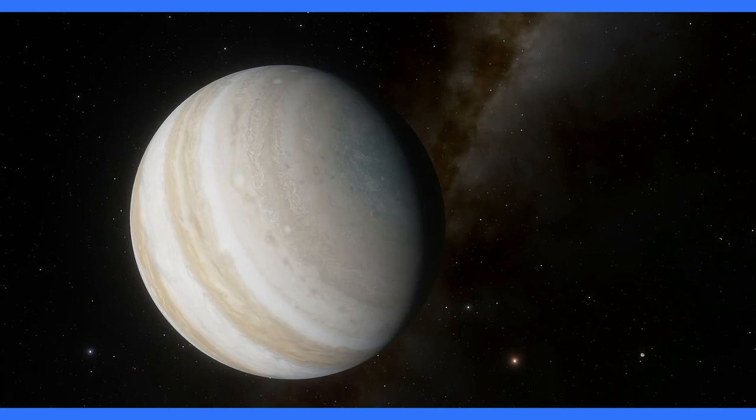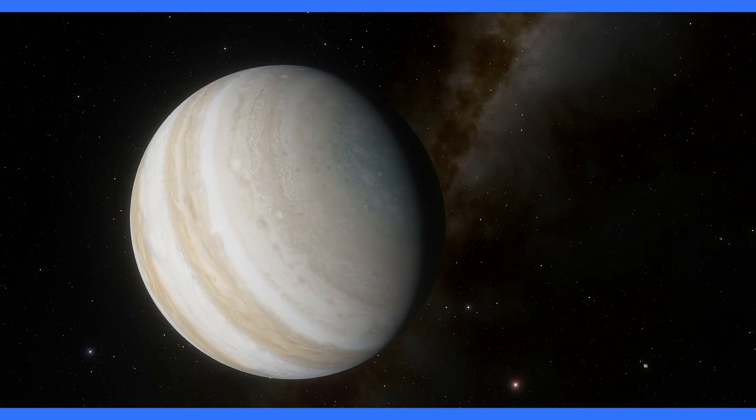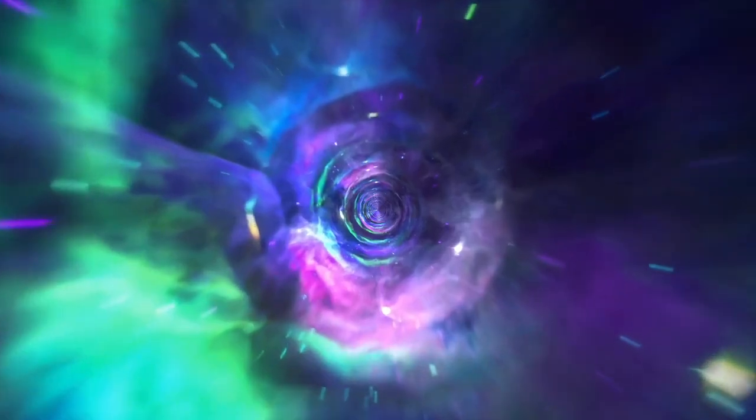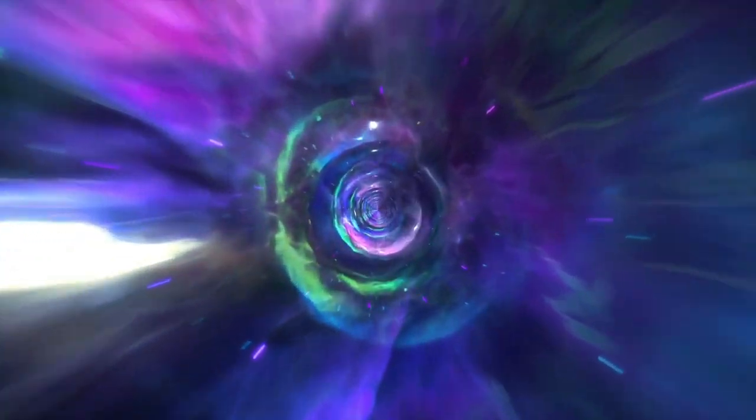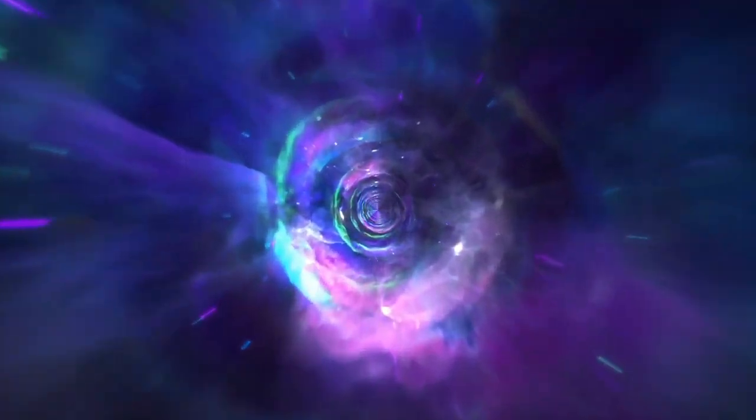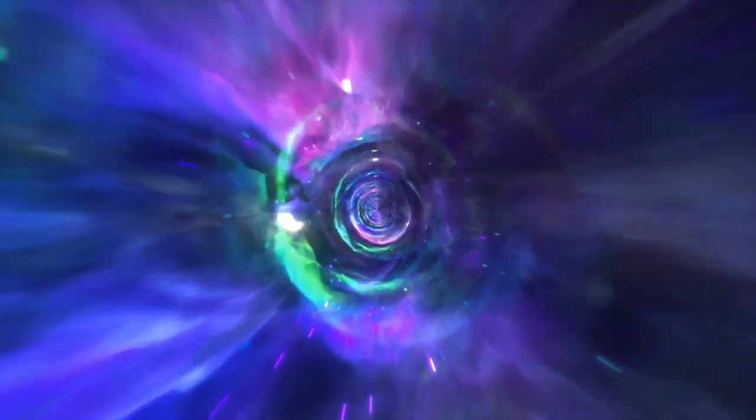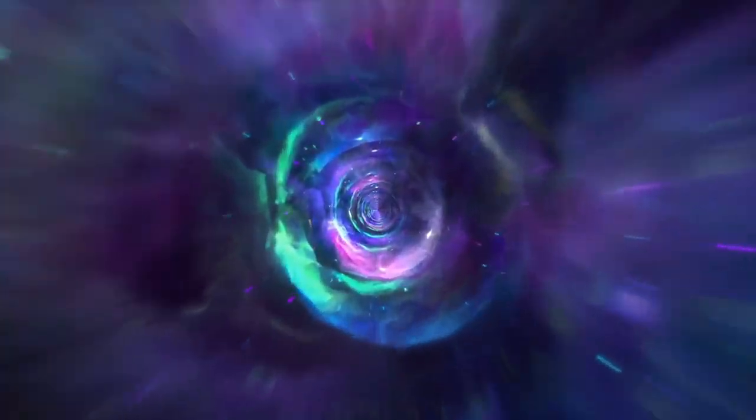But scientists recently discovered an even smaller gassy object in the middle of nowhere. It appears redder than most brown dwarfs and is likely much younger than most, too. This object could have formed just like a brown dwarf from a small cloud of gas, or maybe it was created around a star and somehow got flung off into space.